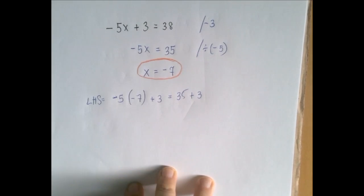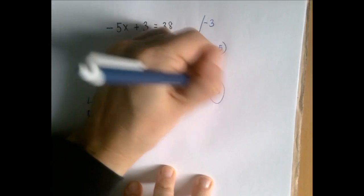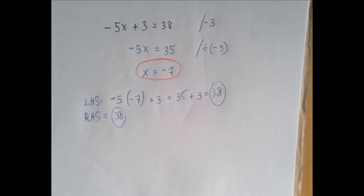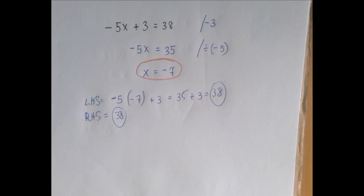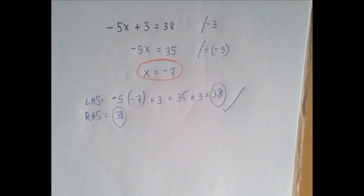And 35 plus 3 is indeed 38, and the right-hand side is already 38. When we put x equals negative 7 into both sides of the equation, the left-hand side and the right-hand side are equal. That is the same thing as to say that negative 7 is a solution of this equation. Thank you for watching.